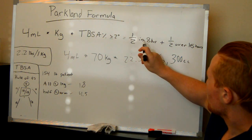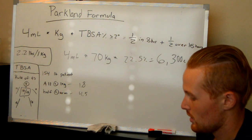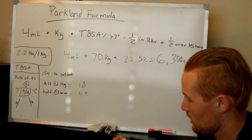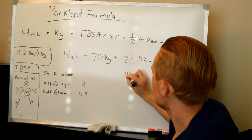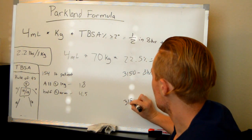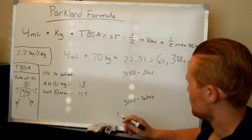So we're going to give half over 8 hours, and another half over 16 hours. So what are we going to set this up to? Well, we got 6,300 divided by 2. We're going to give 3,150 in the first 8 hours, and 3,150 over the next 16 hours. So how fast is this going to be in our infusion pump?